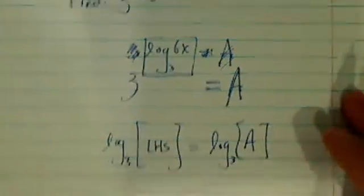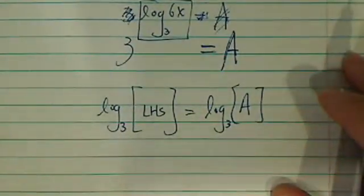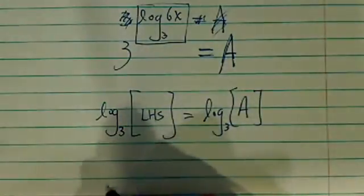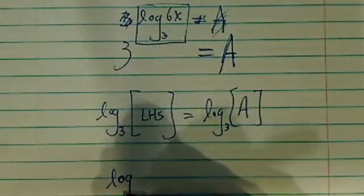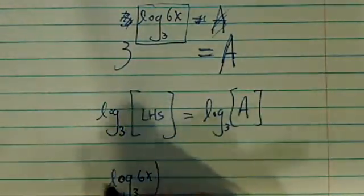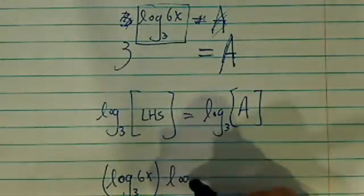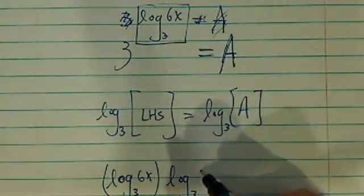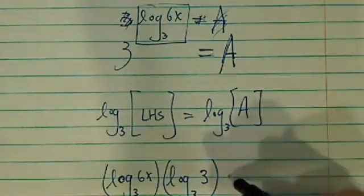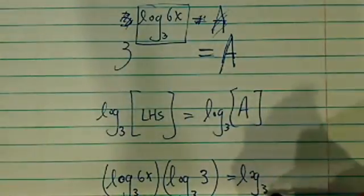That's the right-hand side. When we take a logarithm on the left-hand side, the exponential term comes down. So log base of 3, 6x, comes in the front. We still have log base 3 of 3. This is equal to log base 3 of a.